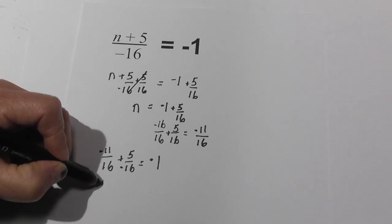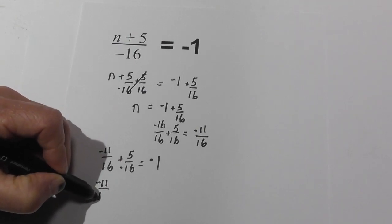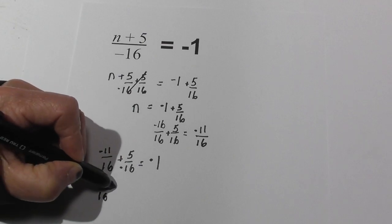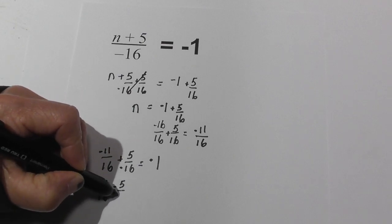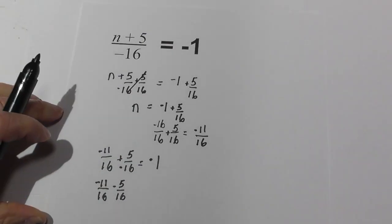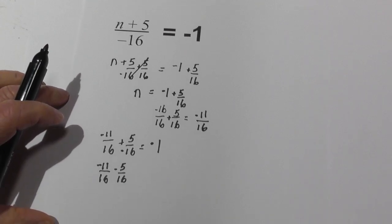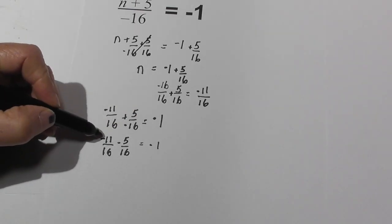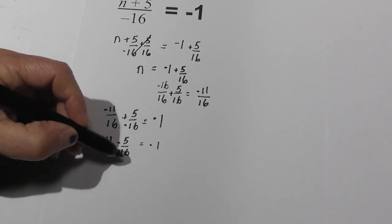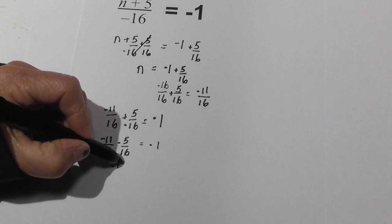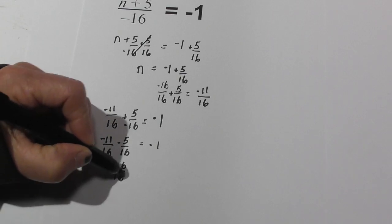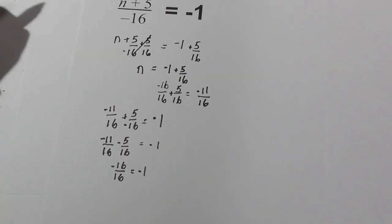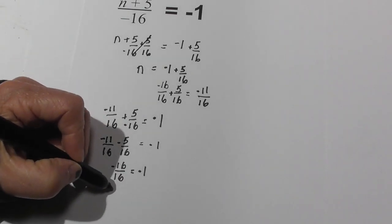So I'm going to rewrite it as negative 11 sixteenths minus 5 sixteenths equals negative 1. Negative 11 sixteenths and negative 5 sixteenths equals negative 16 over 16 equals negative 1. Negative 16 over 16 equals negative 1, so it does work.